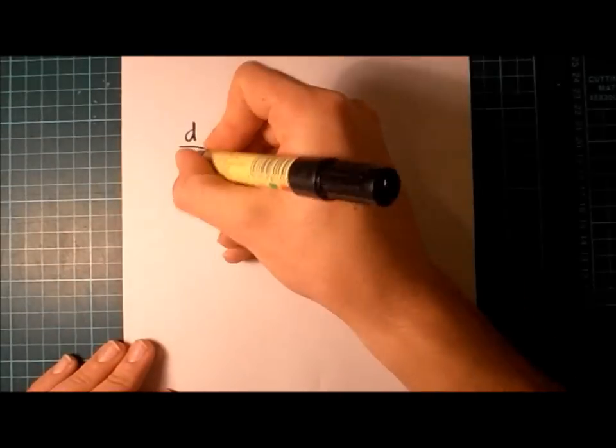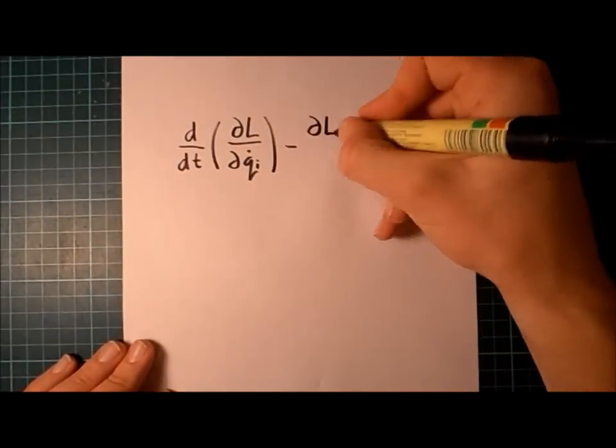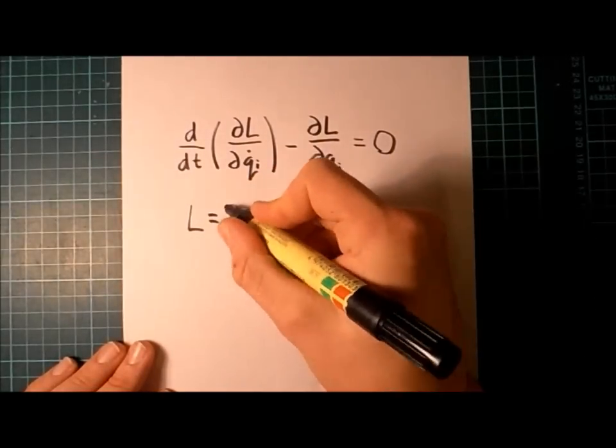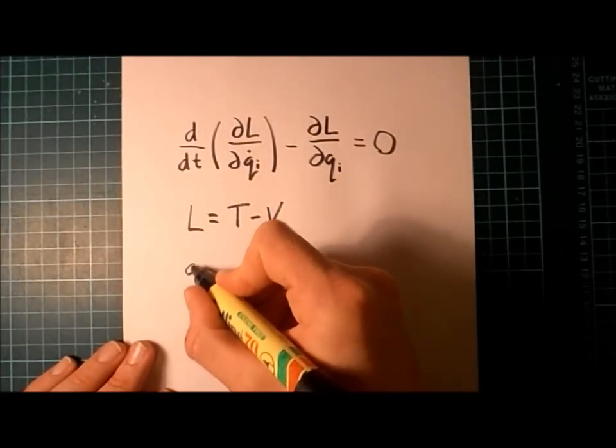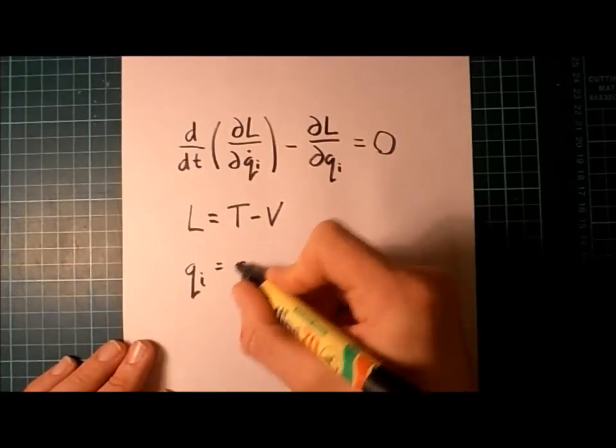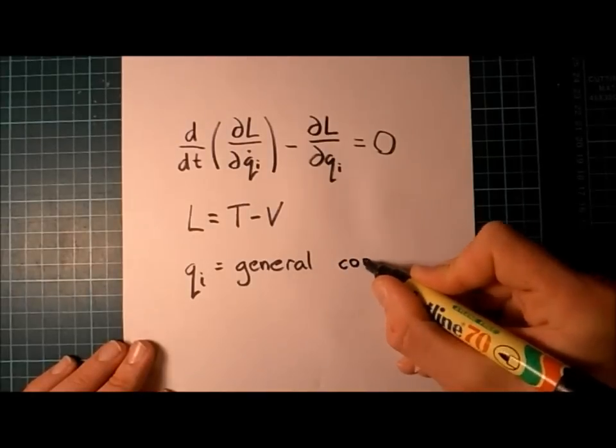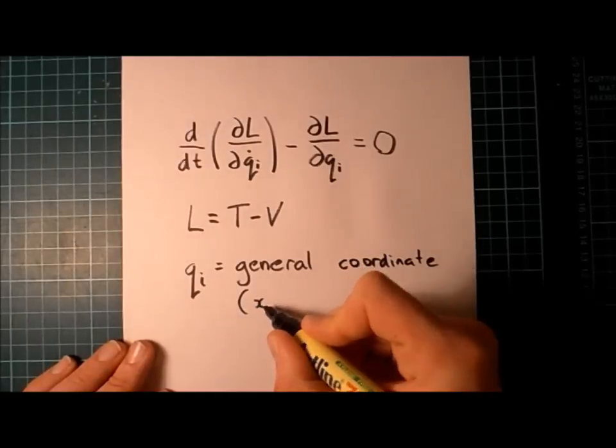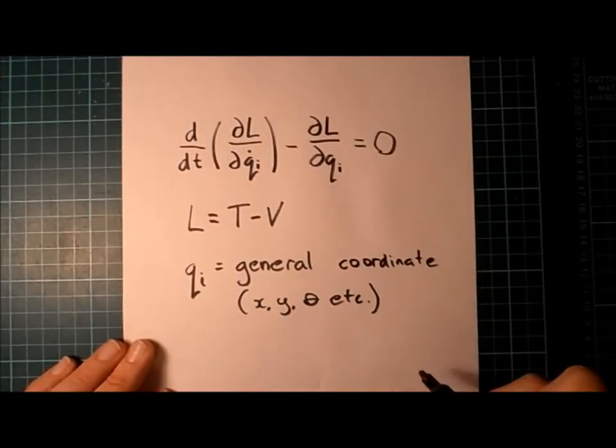So that said, let's have a look at the equation. So here's Lagrange's formula. We've got L, and we've got Q, and then some time derivatives, and some partial derivatives. So what does that mean? Well, L is called the Lagrangian. It's composed of the kinetic energy minus the potential energy of the system. QI simply represents a general coordinate, so the single coordinate that can fully define the system. You can call it x, y, theta, whatever you want. In this case, we're going to be looking at x.